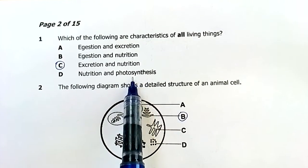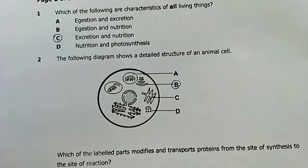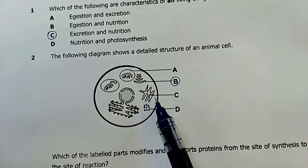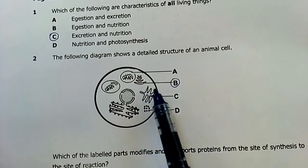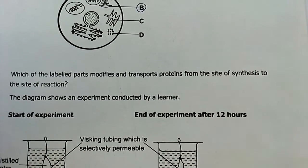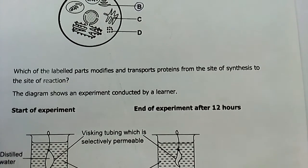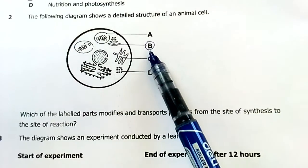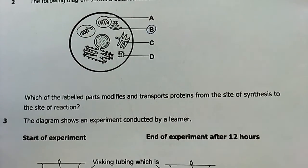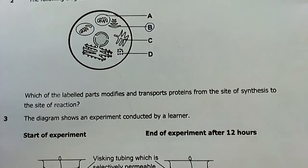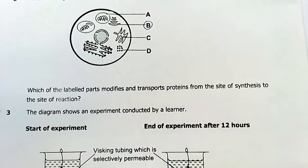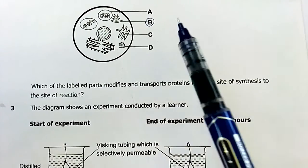Number two: the following diagram shows a detailed structure of an animal cell. I can already tell that's our nucleus, rough ER, smooth ER or ribosomes, then the Golgi apparatus or Golgi body, then vesicles. Which of the labeled parts modifies and transports proteins from the site of synthesis to the site of reaction? My answer is the Golgi apparatus. It modifies and transports proteins from the site of synthesis, which is the cell itself, to the site of reaction, which can even be out of the cell. The ER's functions are usually transportation of materials within the cell, so my take is B.